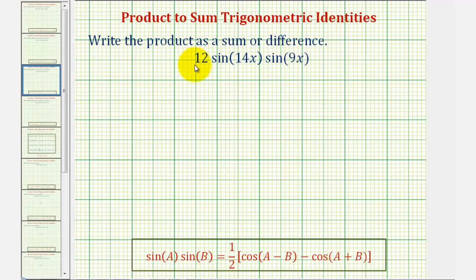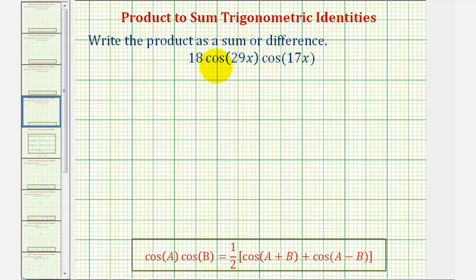Welcome to two examples of writing a product of trig functions as a sum or difference. We'll first write 12 times sine 14x times sine 9x as a difference, and then we'll write 18 times cosine 29x times cosine 17x as a sum.